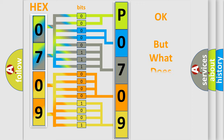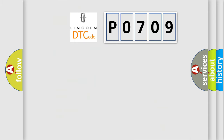We now know in what way the diagnostic tool translates the received information into a more comprehensible format. The number itself does not make sense to us if we cannot assign information about what it actually expresses. So, what does the diagnostic trouble code P0709 interpret specifically for Lincoln car manufacturers?